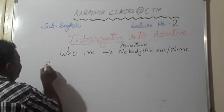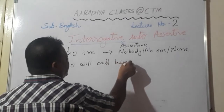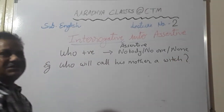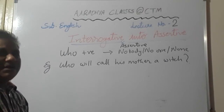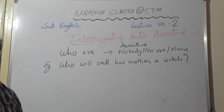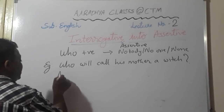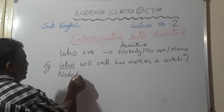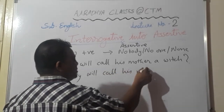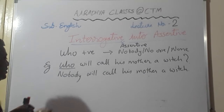For example: 'Who will call his mother?' — here the answer is quite known to everyone. This question has more effect than a plain statement. So in place of 'who,' we write 'nobody': 'Nobody will call his mother.' The given question was a who question — interrogative — and since it was a positive question with no negative words like no, not, or never, in the assertive we use 'nobody,' making the sentence negative assertive.